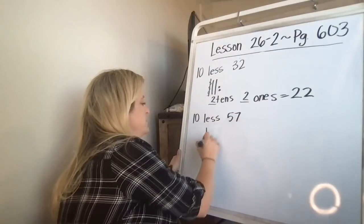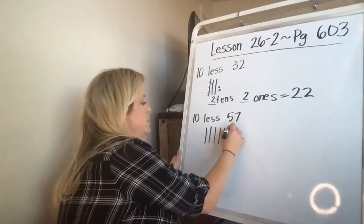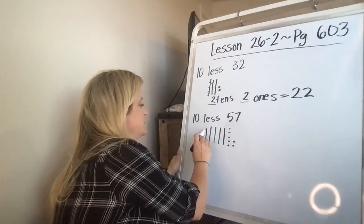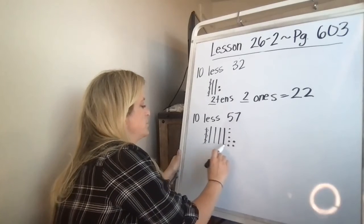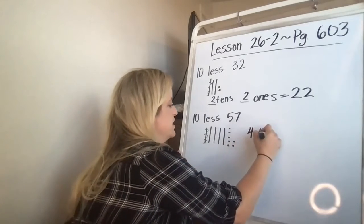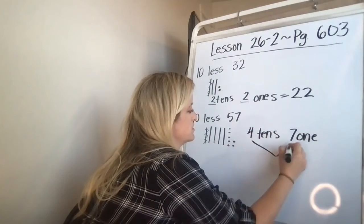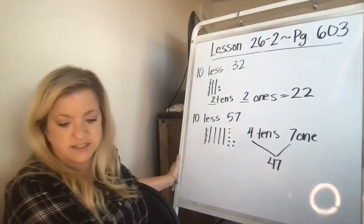Go ahead and draw 57. 10, 20, 30, 40, 50, one, two, three, four, five, six, seven. Cross out 10 of those. Now I have one, two, three, four tens, seven ones. They didn't change at all. I'll bring those down. And I have 47.